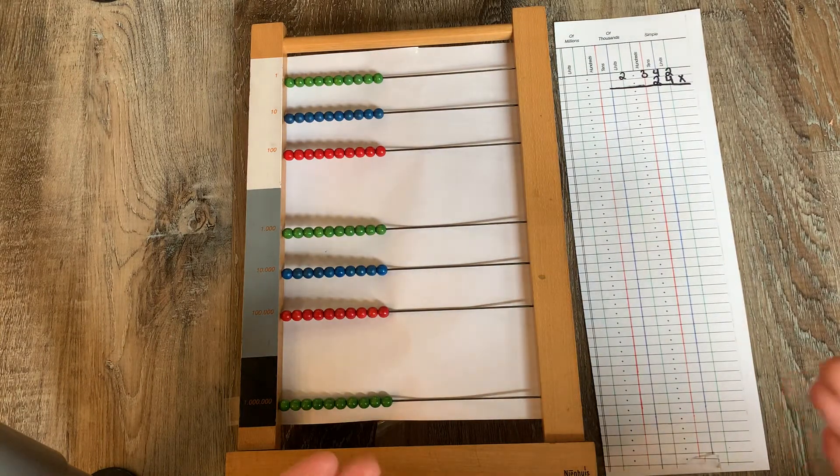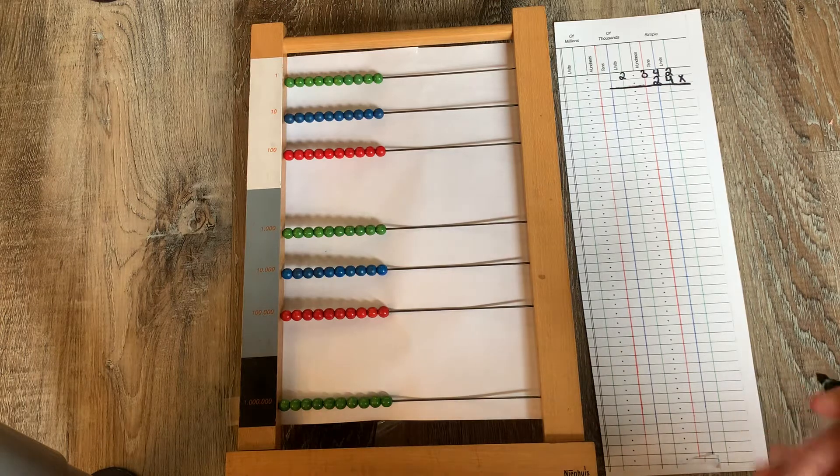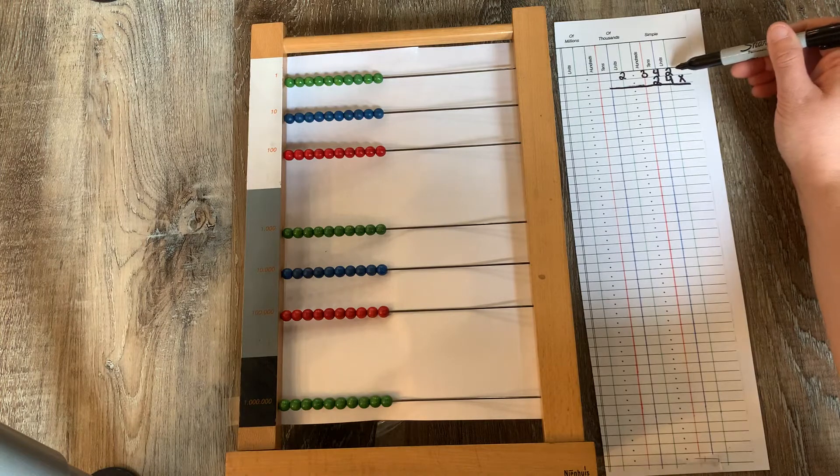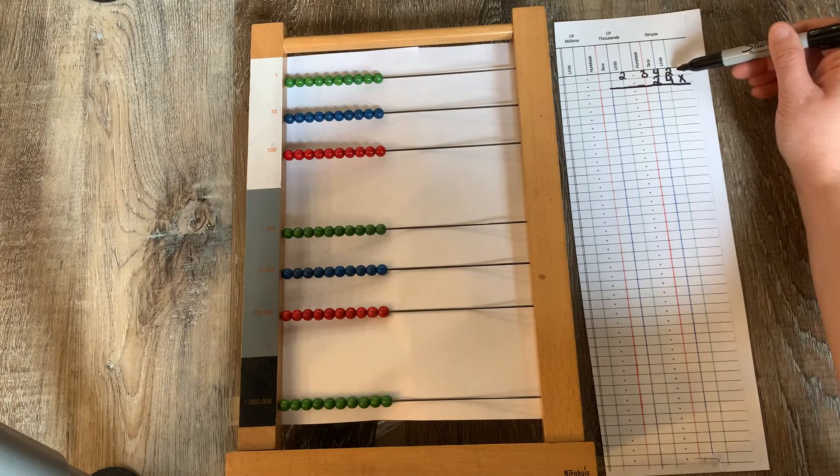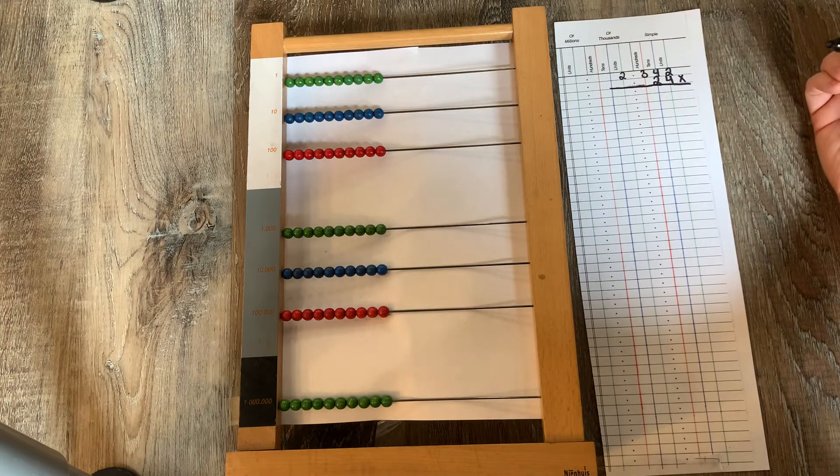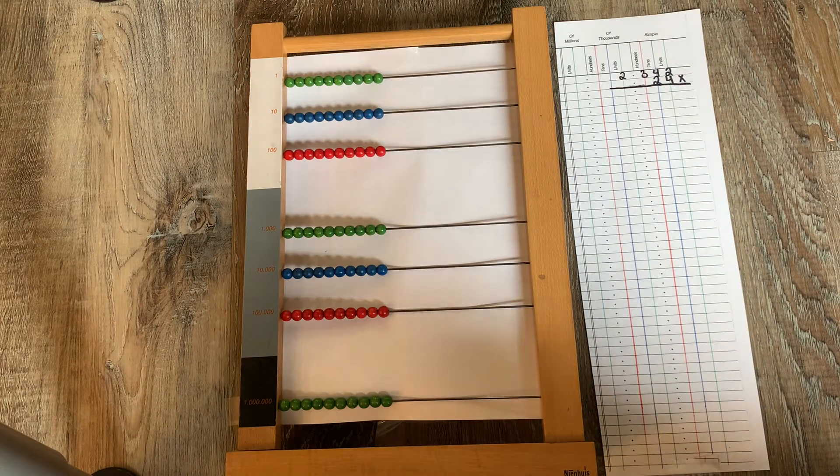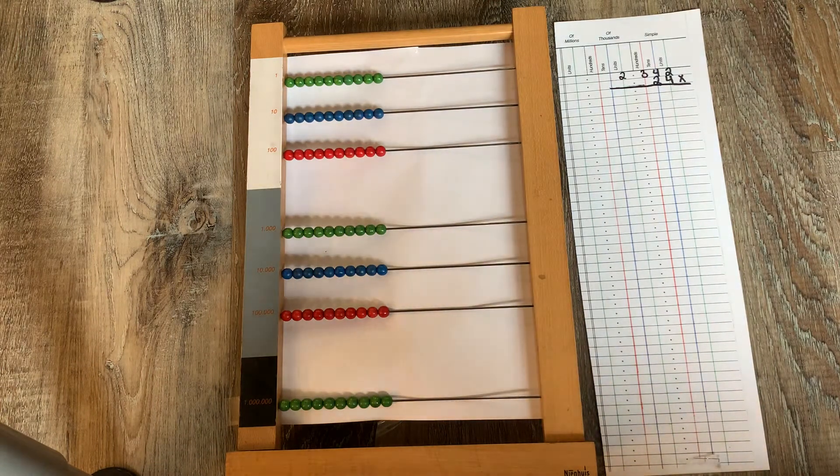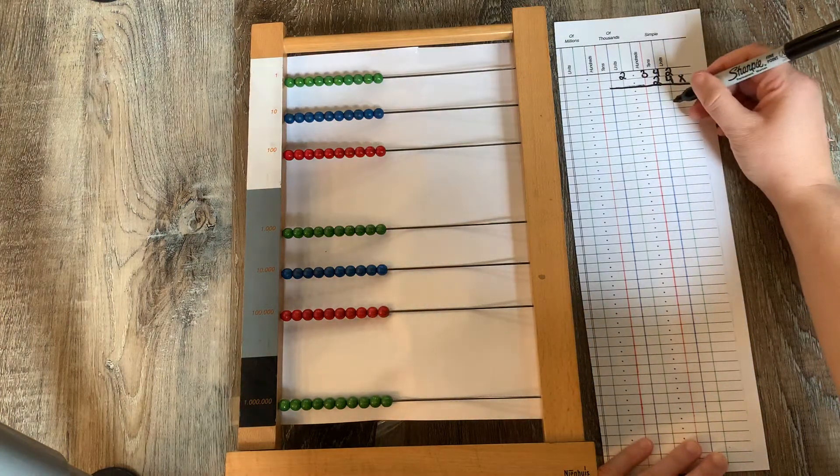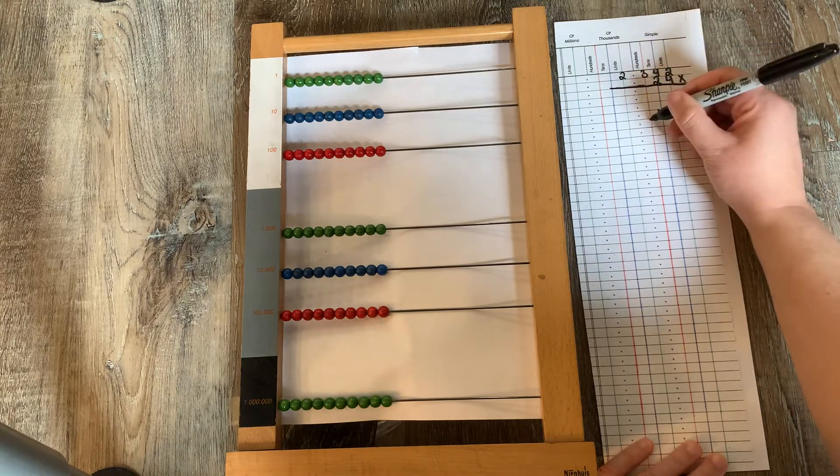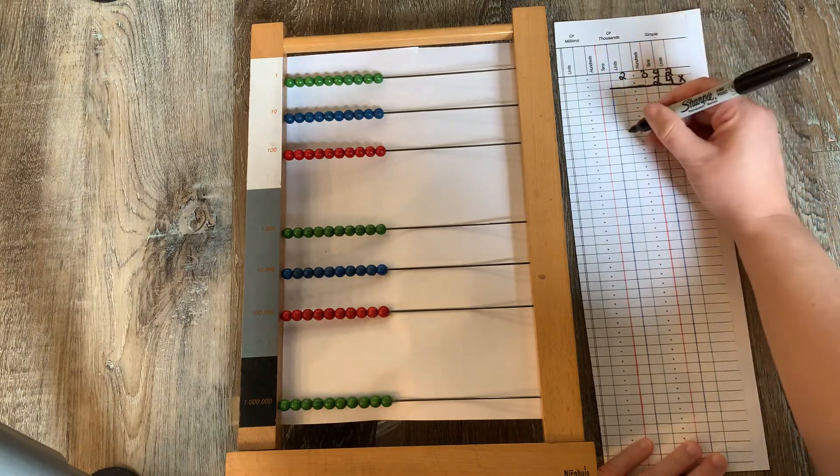In order to do this problem we need to decompose the multiplicand. The multiplicand is the number on top. When I think of the word decompose I think breaking down. So we're going to break down that top number. Let's begin. So I have two units, four tens, three hundreds, two thousands.